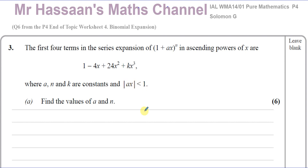We've got to find the values of a and n. When we get to P4, we're no longer dealing with positive integer powers — we're dealing with negative and/or fractional powers, in which case we are not able to use the NCR button on our calculators.